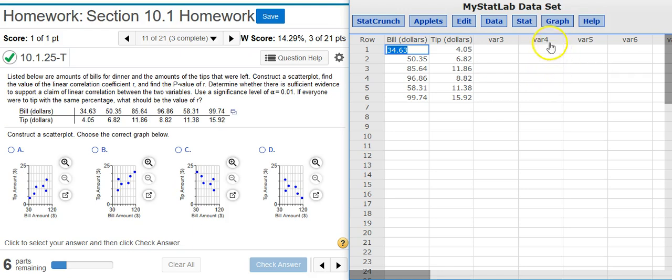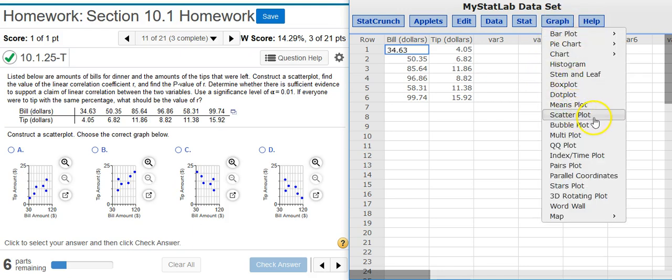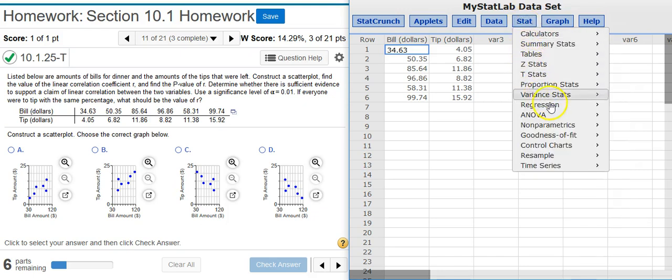Okay, to make the scatter plot, I could just go up here to graph scatter plot, but I know I'm going to have to do some linear correlation work to get the rest of the problem out. And I also know I get a scatter plot when I go and do that linear correlation in StatCrunch. So instead of going to graph, I'm going to come up here to Stat, Regression, Simple Linear.